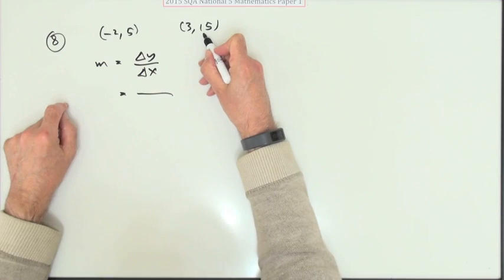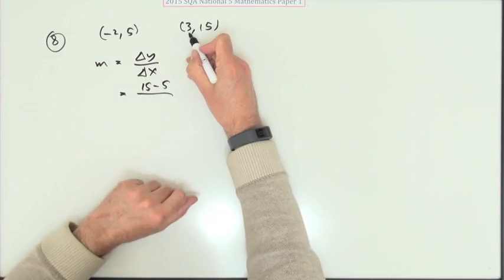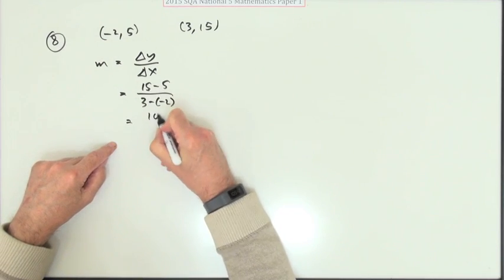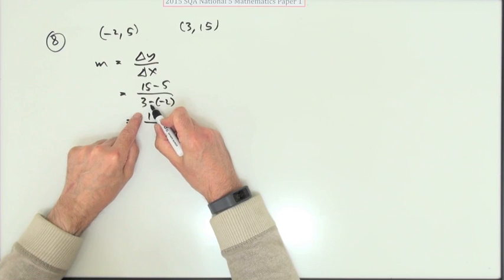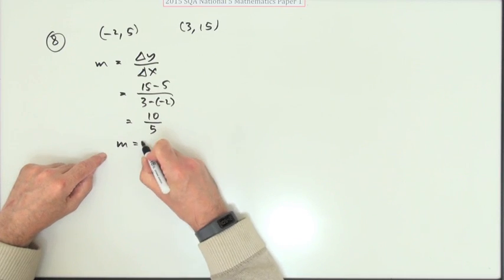y2 minus y1, that's a 15 take away a 5. x2 minus x1, that's a 3 take away a negative 2. 15 take away 5 is 10. That's 3 plus 2, which makes 5. So the gradient of the line is 2.